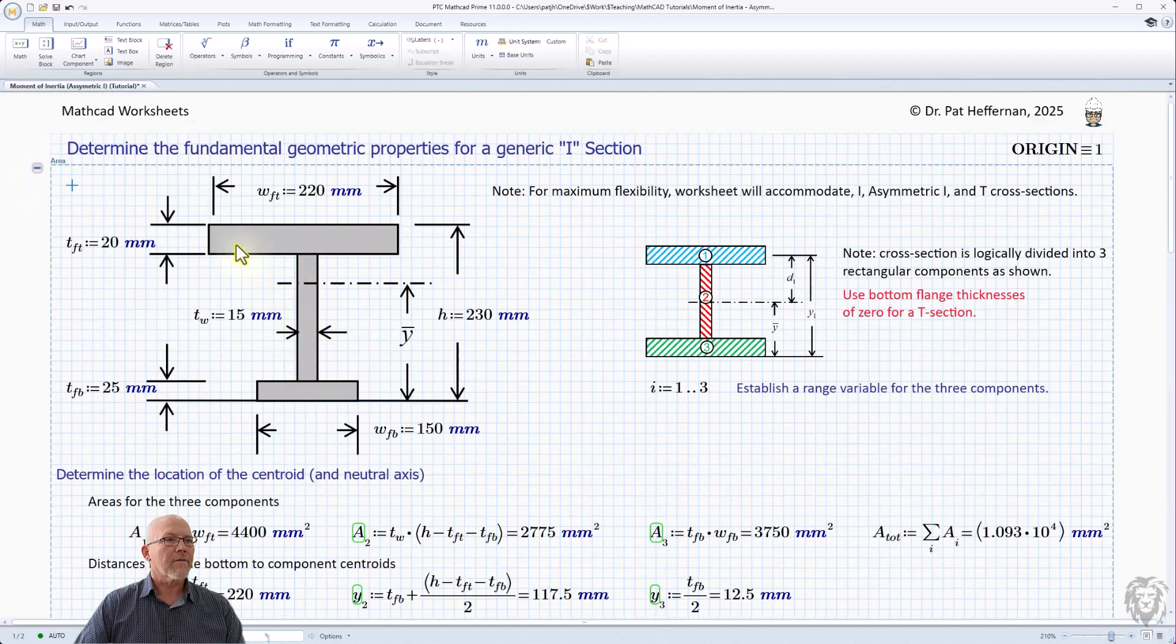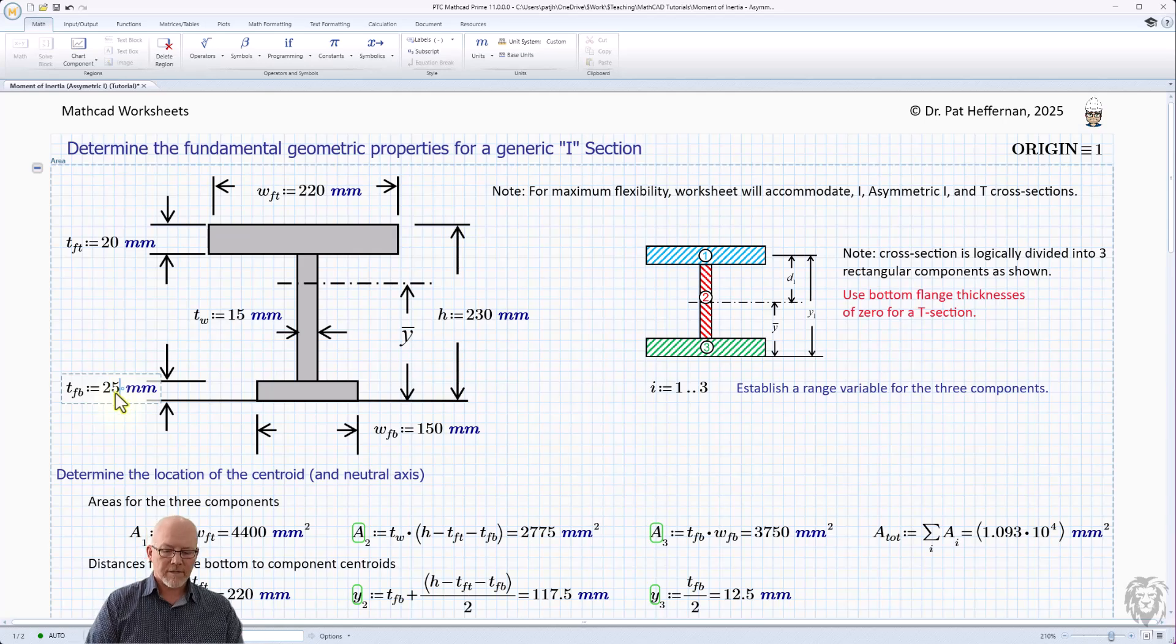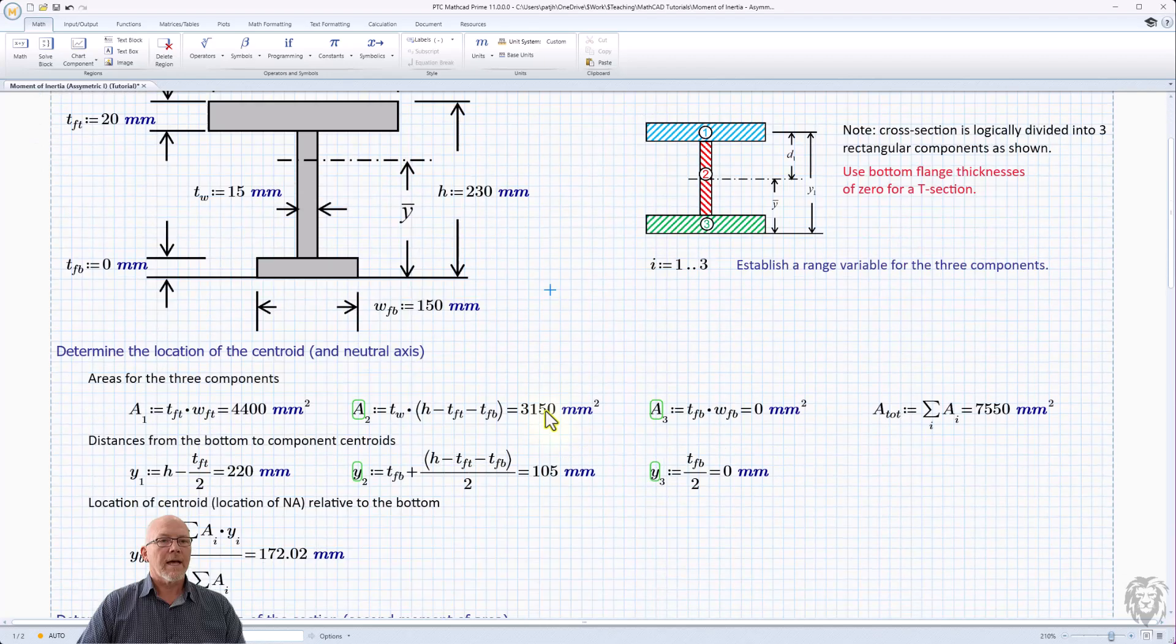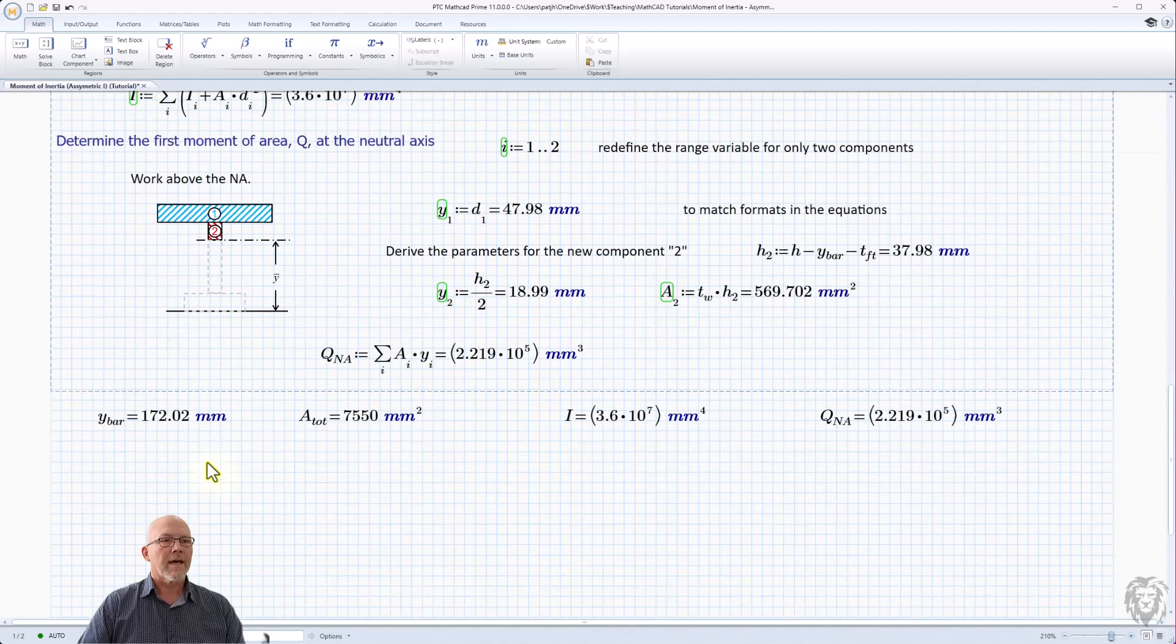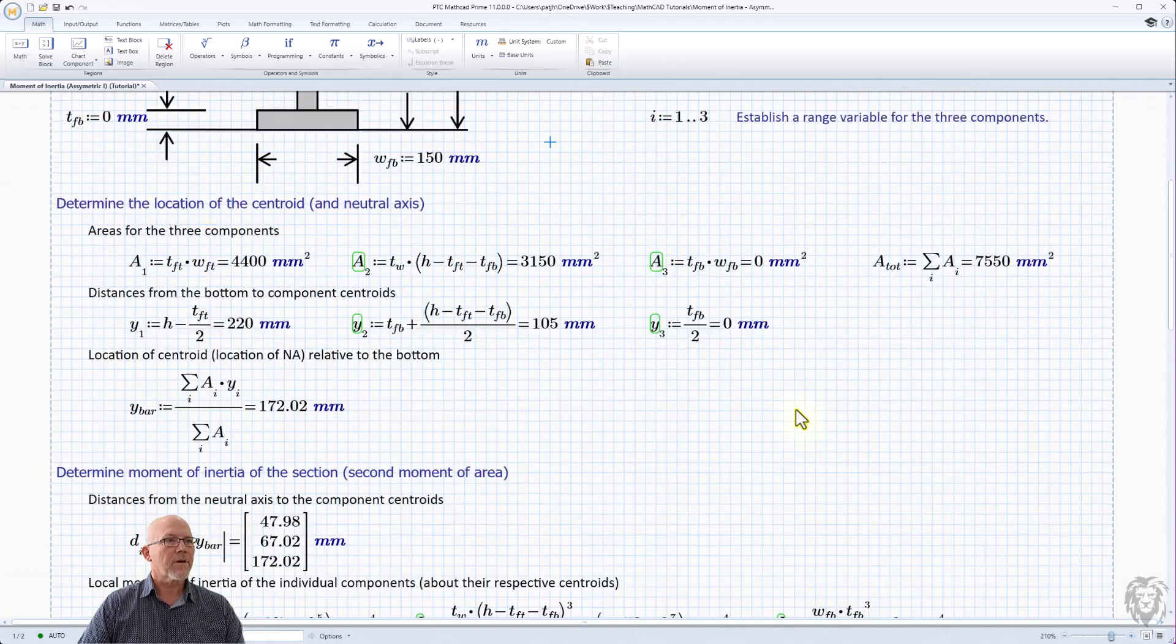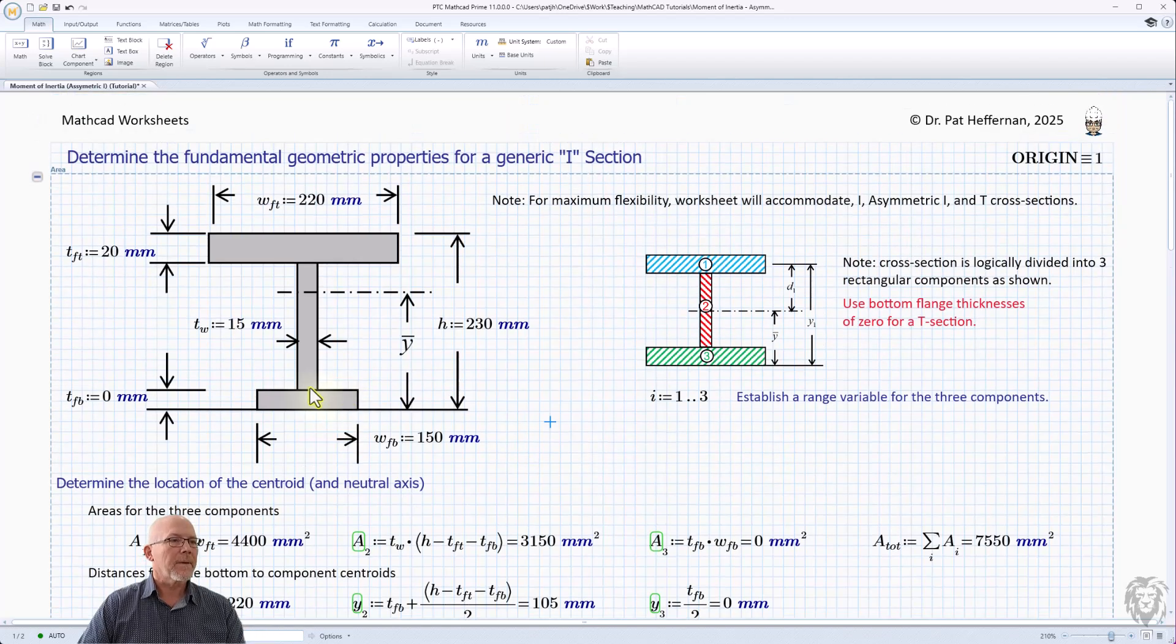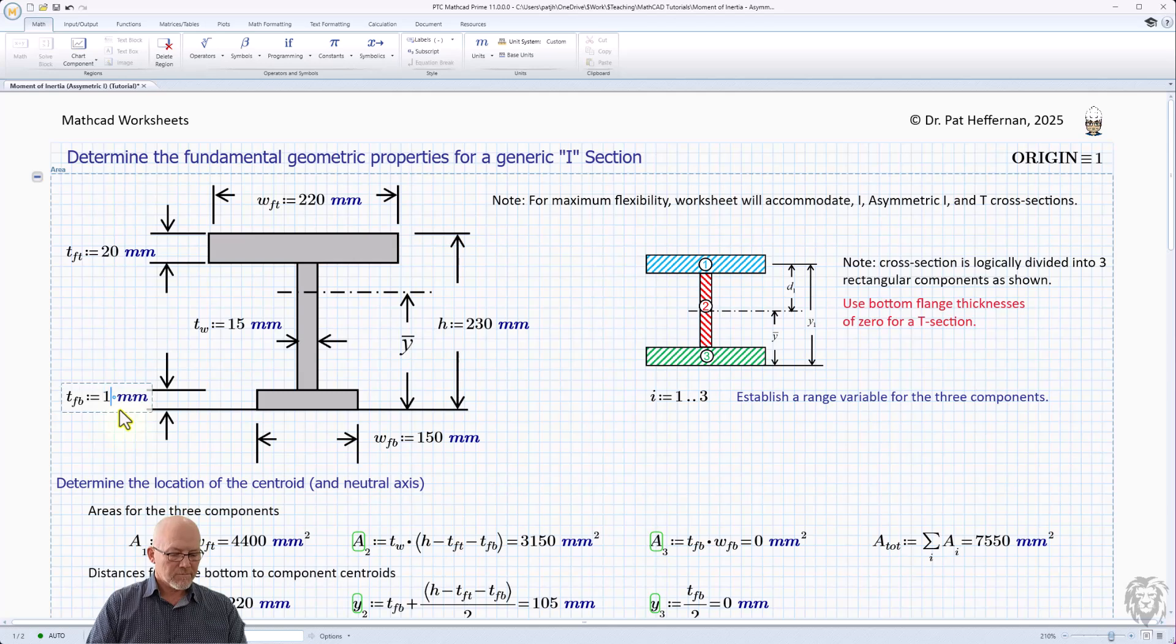The value of this is that these are all adjustable. For example, if you wanted to have a T-beam, you could move that to zero, and all of the values would adjust. This has zero depth to it, and everything works for a T-beam. So it works for an I-beam, works for an asymmetric I-beam, works for a T-beam. Works just about every normal section that fits into a rectangle.